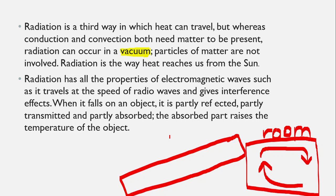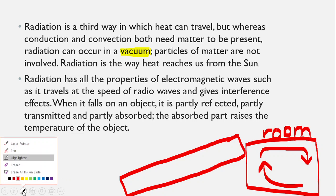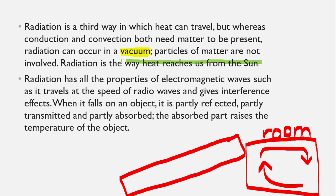Radiation is a way of heat transfer that does not require any matter or material to carry it, and it occurs in a vacuum. One of the main examples is heat reaching us from the sun. The sun's heat travels across space — which is a vacuum — to the Earth's surface through radiation, with no particles involved.